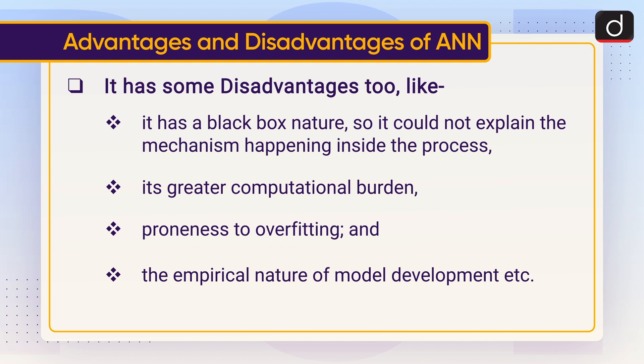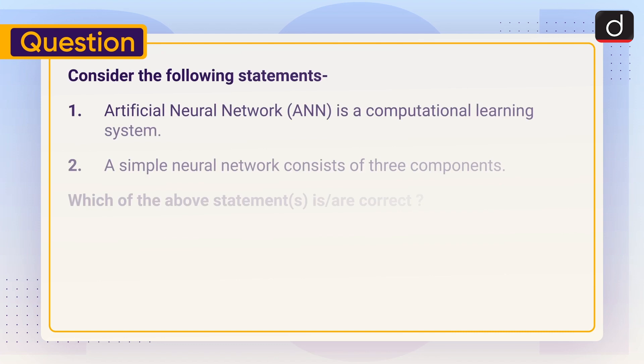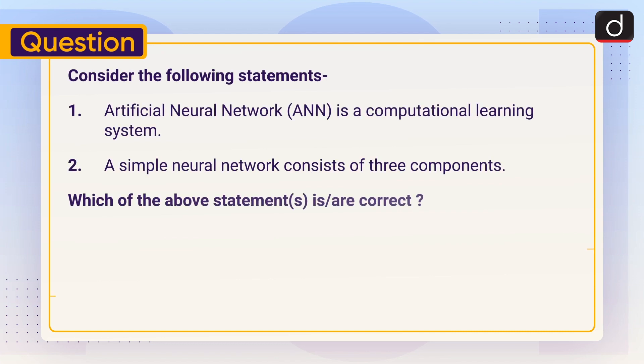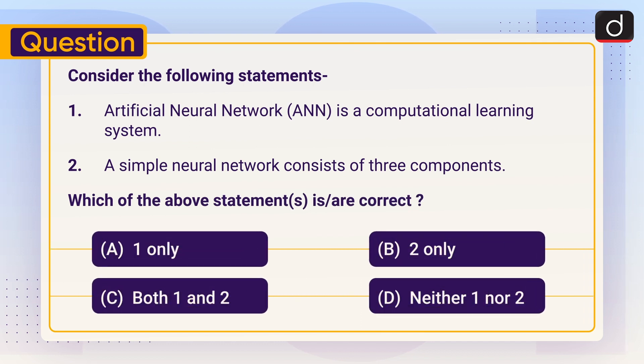Now it's time for the practice question. Consider the following statements: One, Artificial Neural Network, that is ANN, is a computational learning system. Two, a simple neural network consists of three components. Which of the above statements is or are correct? One only, two only, both one and two, or neither one nor two? Send the answer to this question in the comment section. Stay tuned for the next episode. Thanks for watching, have a great day.